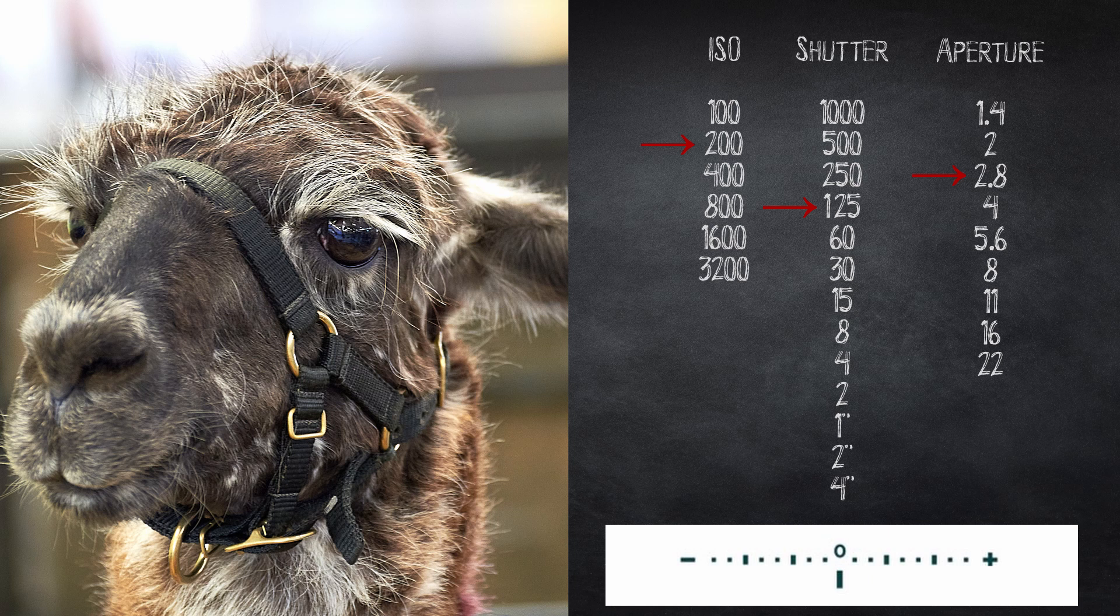However I would be concerned that the llama is moving so I might change the shutter to 1/250th of a second just to make sure you get the shot. This would make the exposure one stop underexposed so increasing the ISO to 400 makes the exposure correct again.